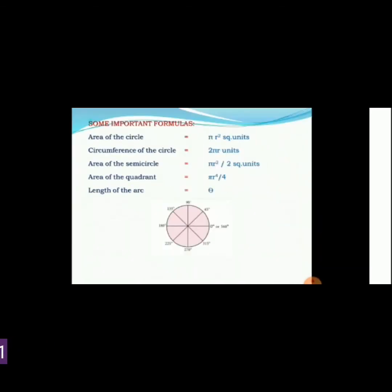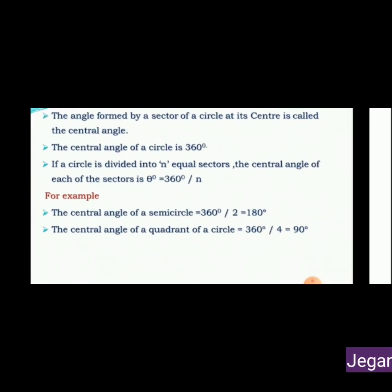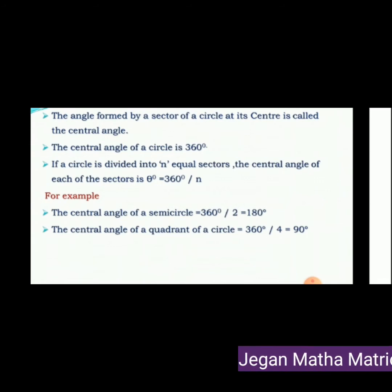Central angle: The angle formed by a sector of a circle at its center is called the central angle. The central angle of a full circle is 360 degrees.